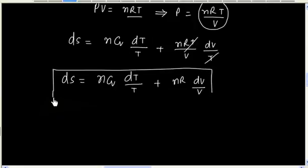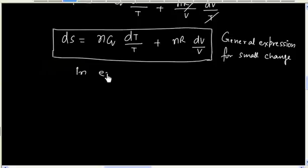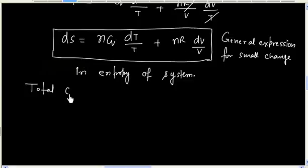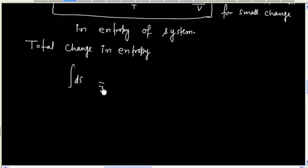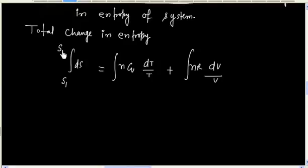This is the general expression for a small change in entropy of the system. We can integrate this expression: the integral of n Cv dT/T plus nR dV/V. Let the initial entropy be S1, final entropy S2, initial temperature T1, final temperature T2, initial volume V1, and final volume V2.